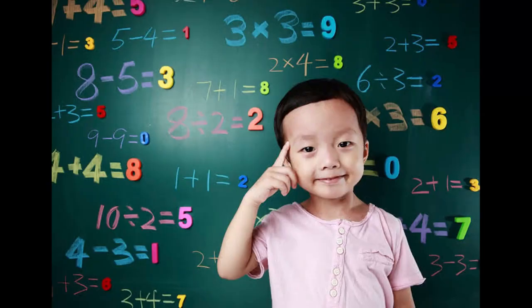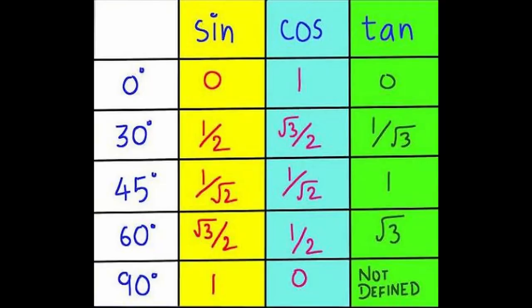The next big challenge is to memorize the standard values of trigonometric ratios. We are normally required to memorize the trigonometric ratios for standard angles like 0, 30, 45, 60, and 90 degrees. I use my five fingers to remember these values.